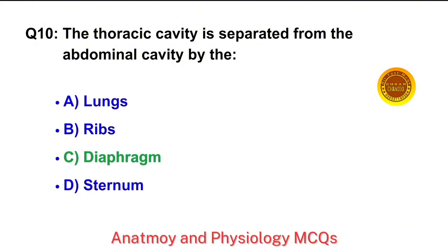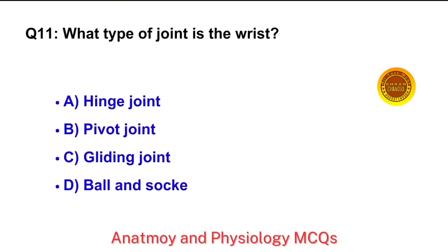Question No. 11. What type of joint is the wrist? The right answer is option C: Gliding joint.